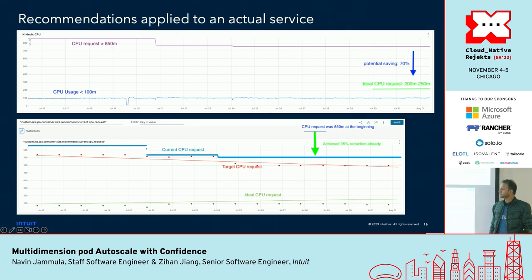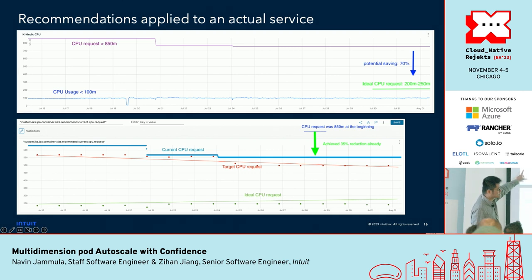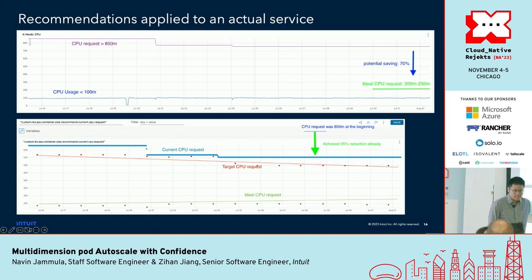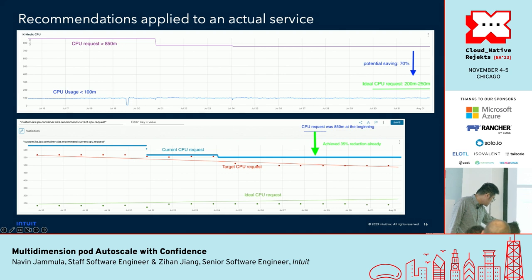Here is a demo for an actual production service running our autoscale engine. Before running it, you can see a 70% cost reduction opportunity. After running the autoscale engine over a few weeks, for this resource over-provisioned service, you can see the recommendation gradually reduces by 10% each iteration — and in the long term the ideal and target converge. Before this talk, this application had already reached the ideal state, saving a few hundred CPU units, and we have seen no incidents in the past.